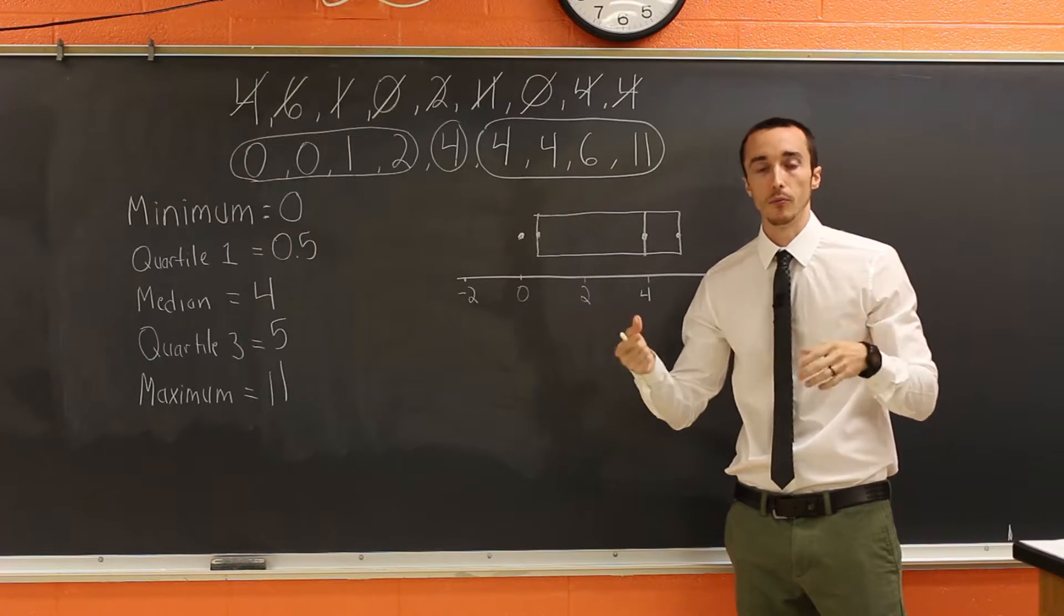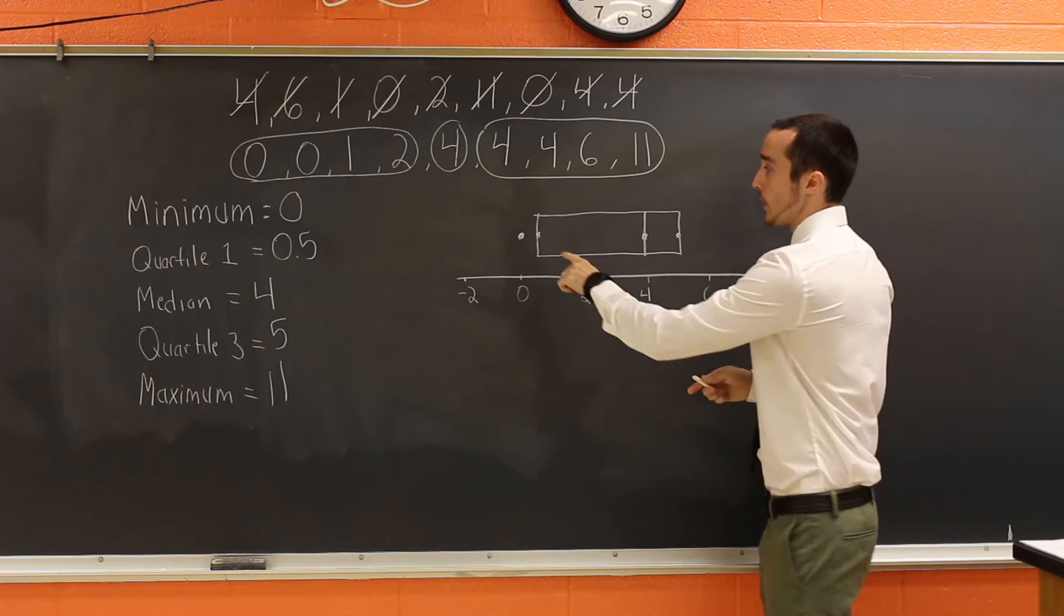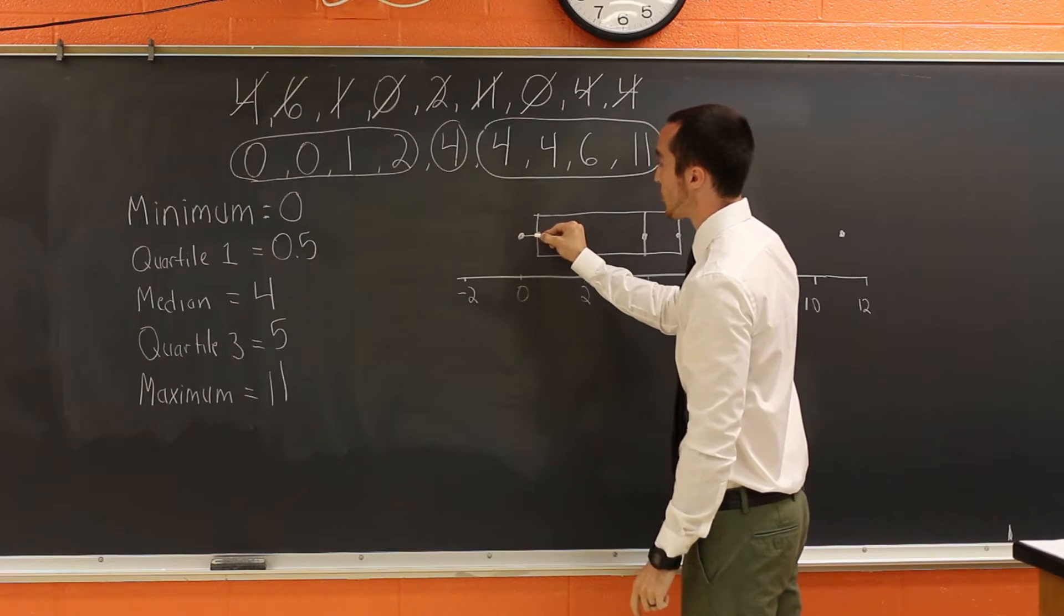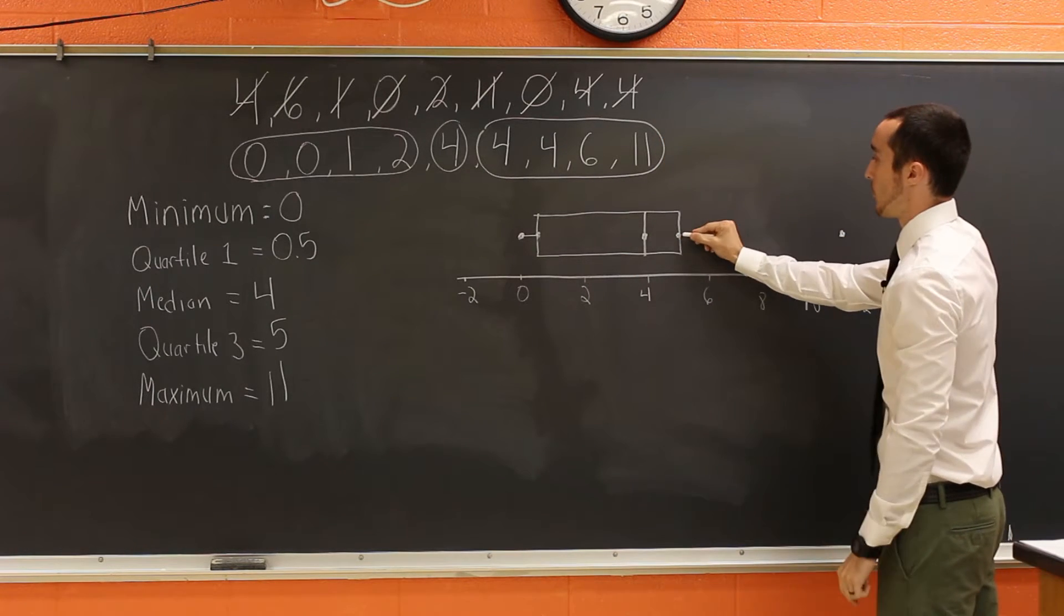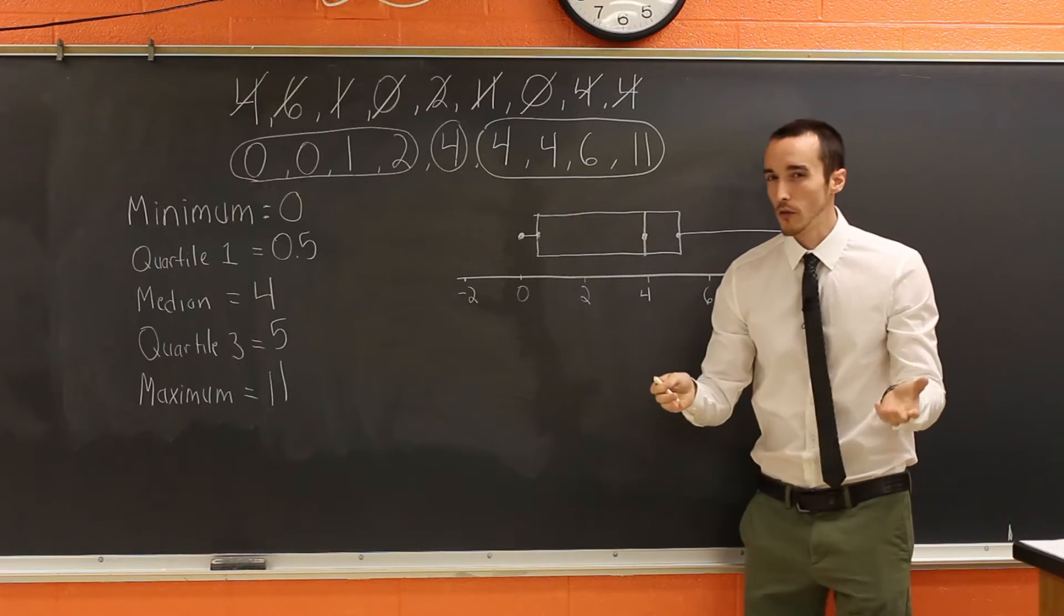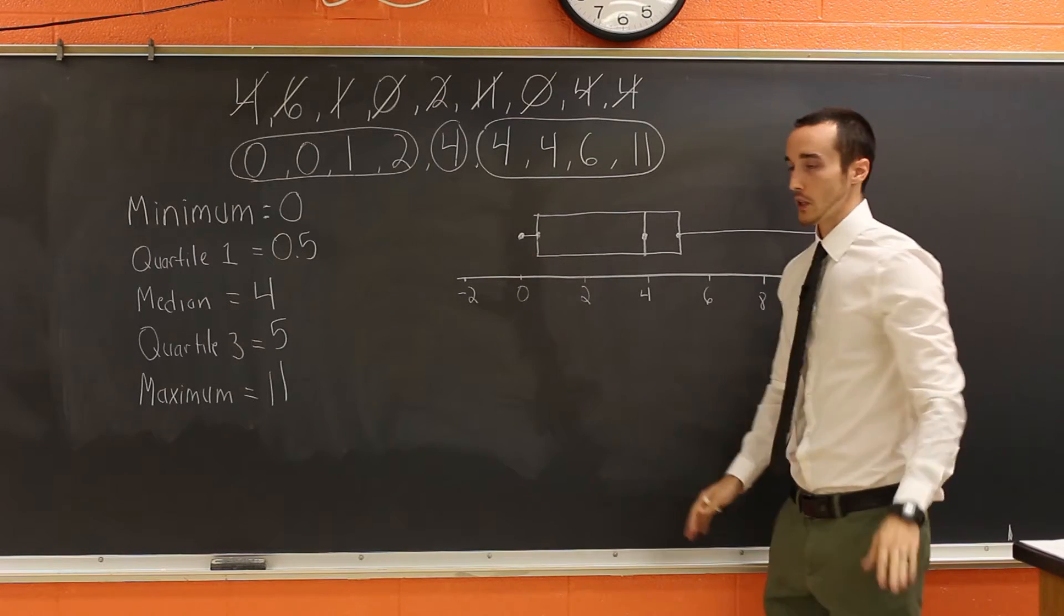The whiskers, sort of a dumb reason that we call it the whiskers, but they peel out to the edges from quartile one to the minimum. So this is a very short whisker. And then from quartile three to your maximum, which this, of course, is a longer whisker. So it's sort of a corny name for it, but this is the box and then this is the whiskers.